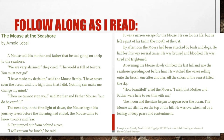Even before the morning had ended, the mouse came to know trouble and fear — he was having a very difficult and scary time. A cat jumped out from behind a tree. 'I will eat you for lunch,' he said. It was a narrow escape for the mouse. He ran for his life, but he left a part of his tail in the mouth of the cat. By afternoon the mouse had been attacked by birds and dogs. He had lost his way several times. He was bruised and bloodied.